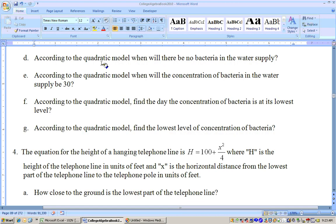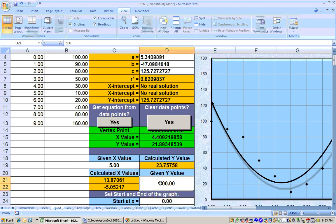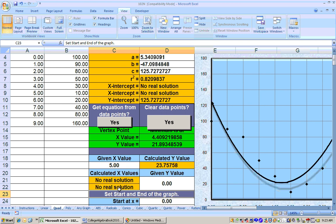The next problem says, according to the quadratic model, when will there be no bacteria in the water supply? So let's do part D first, and we'll put 0 in for Y, because that's Y standing for the concentration, and we get no real solution. That means that the correct answer to this problem is never. There will never be no bacteria in this water supply.